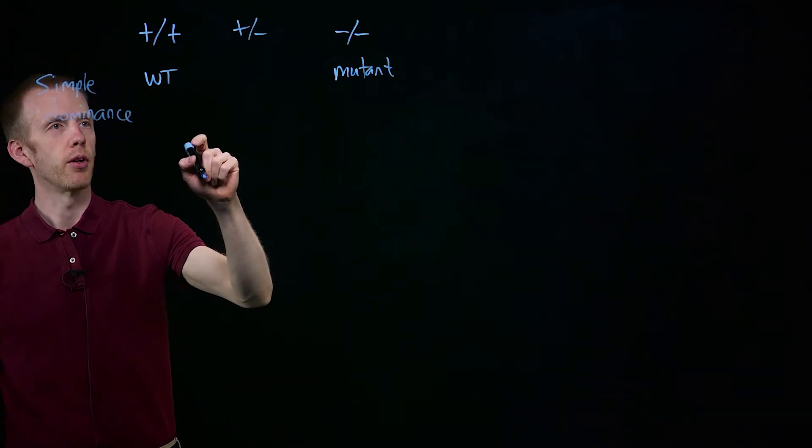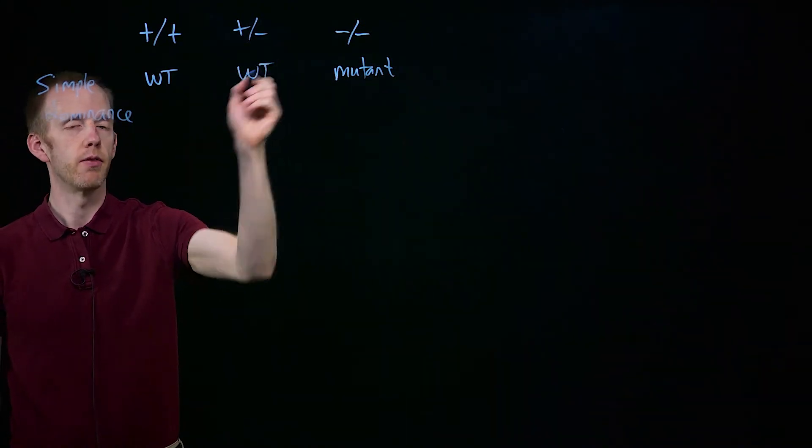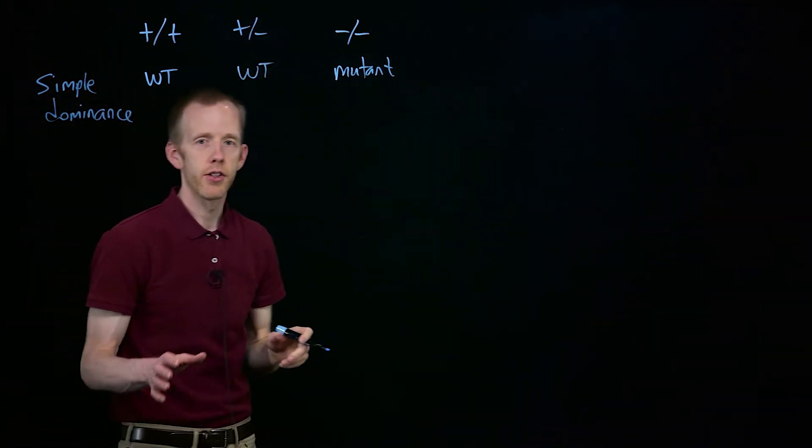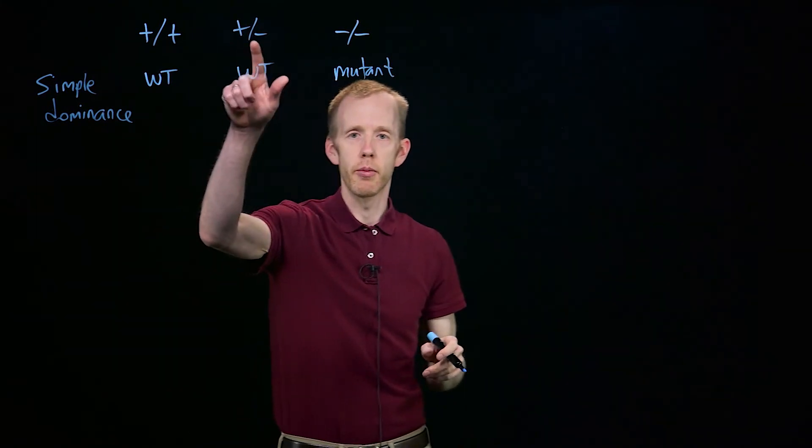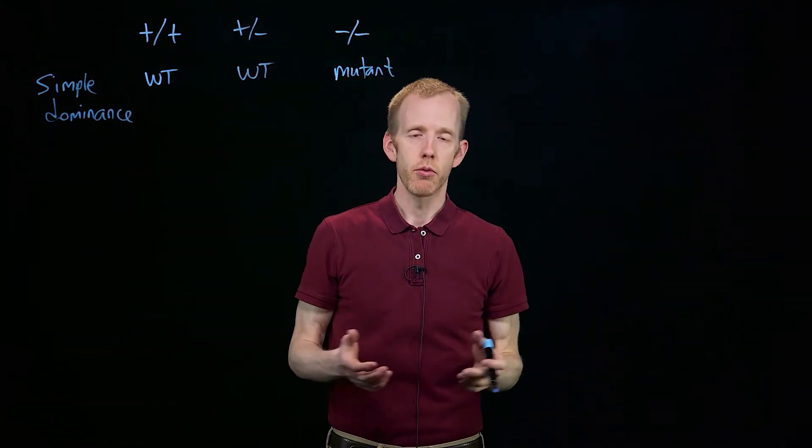And if we discover, for example, that this heterozygous individual is wild type, that tells us that plus is dominant to minus, and we've got our answer.